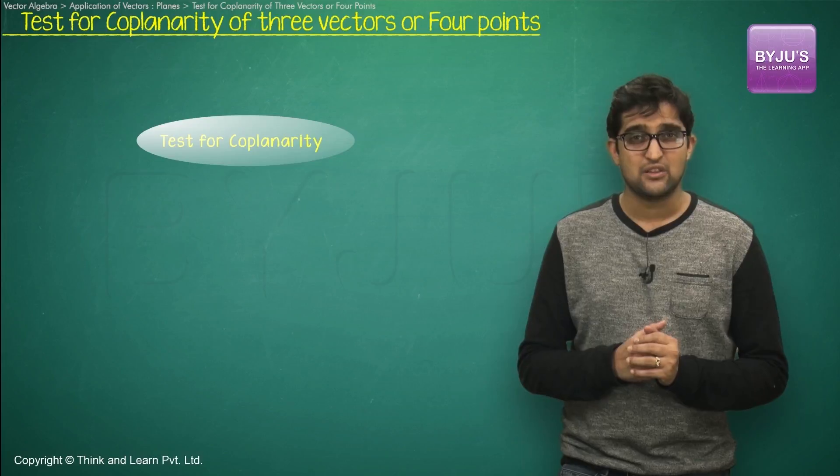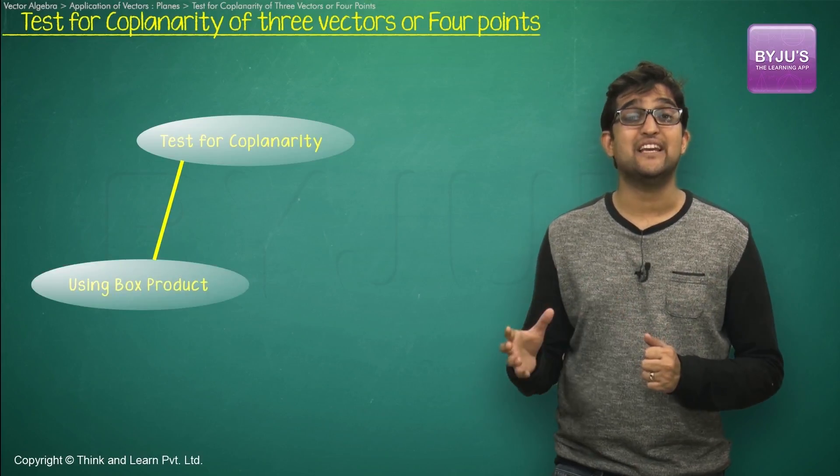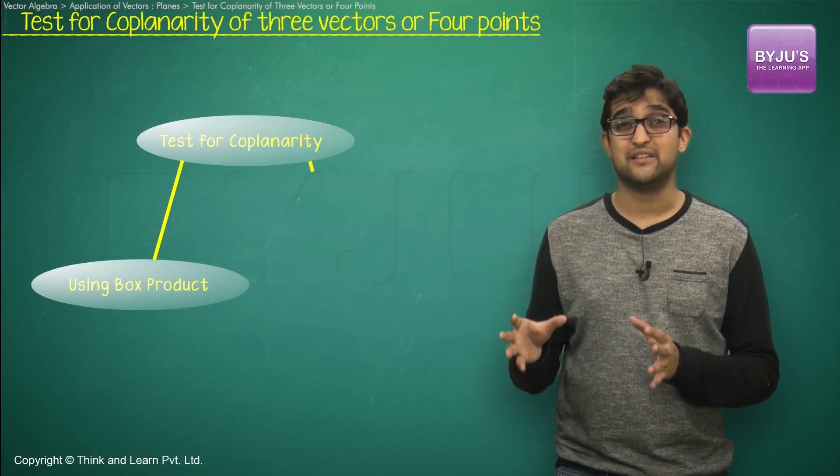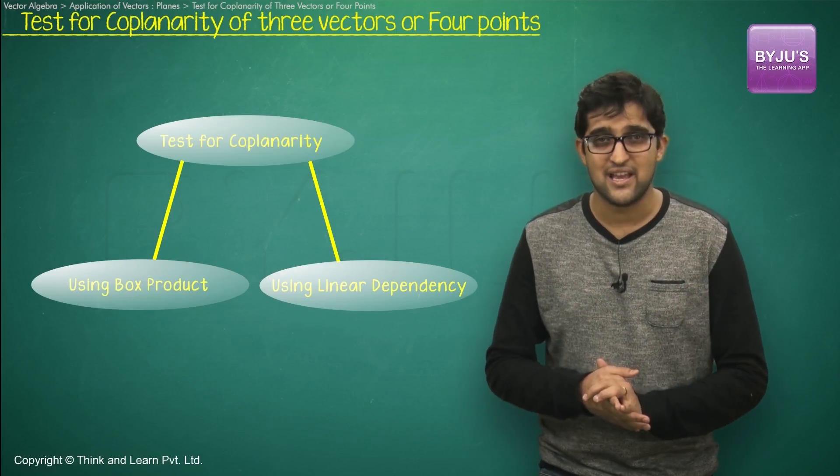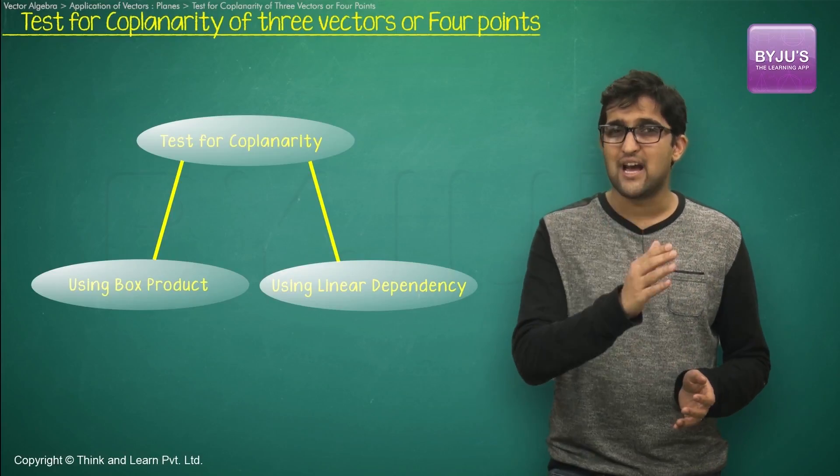This can be done in two ways. The first method by using the idea of box product and the second method by using linear dependency of vectors. Let's see both these methods one after another.